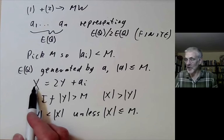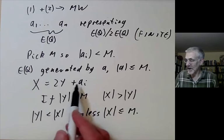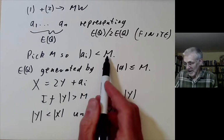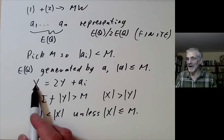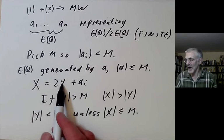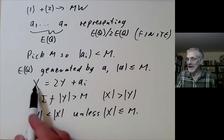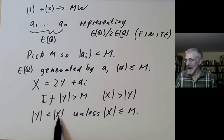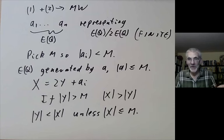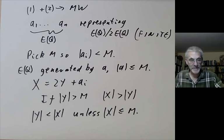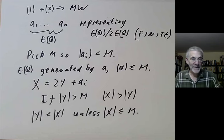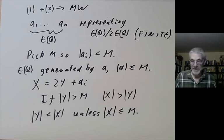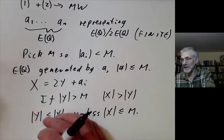We can rewrite this as saying that y is less than x unless x has length at most M. This shows that every point x can be written as a linear combination of points of length at most M. You do this by induction. You keep rewriting x as 2y plus Ai with y less than x. You can keep doing this until x is length at most M. So you can reduce every point to points of length at most M. This shows that the full Mordell-Weil follows from the two properties I mentioned.